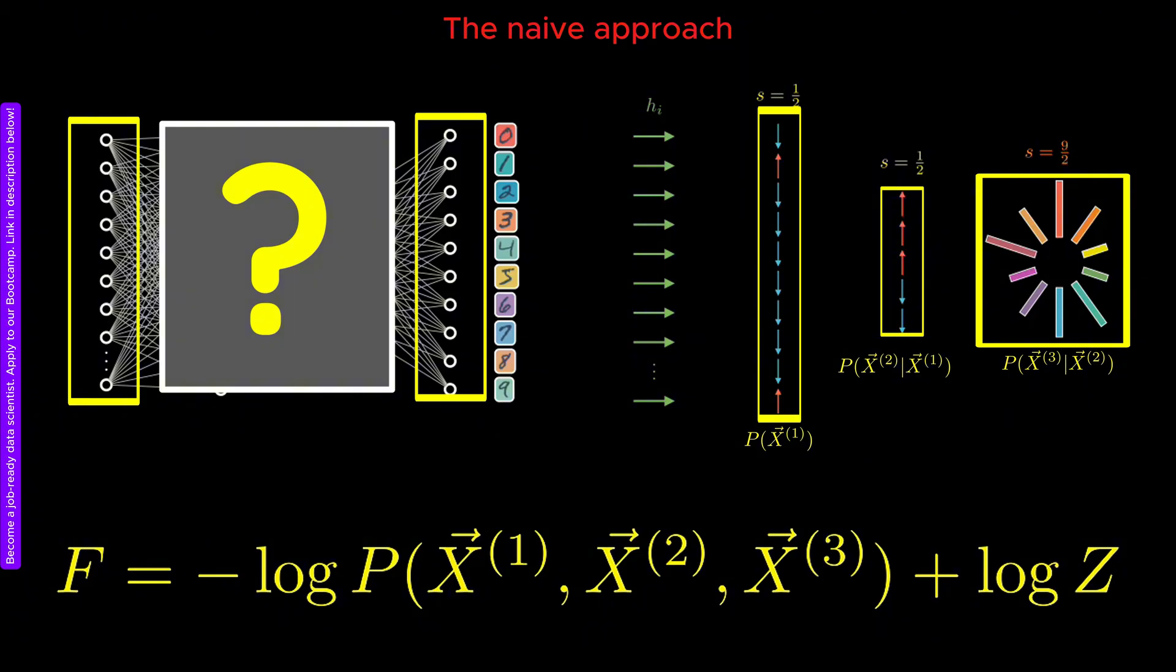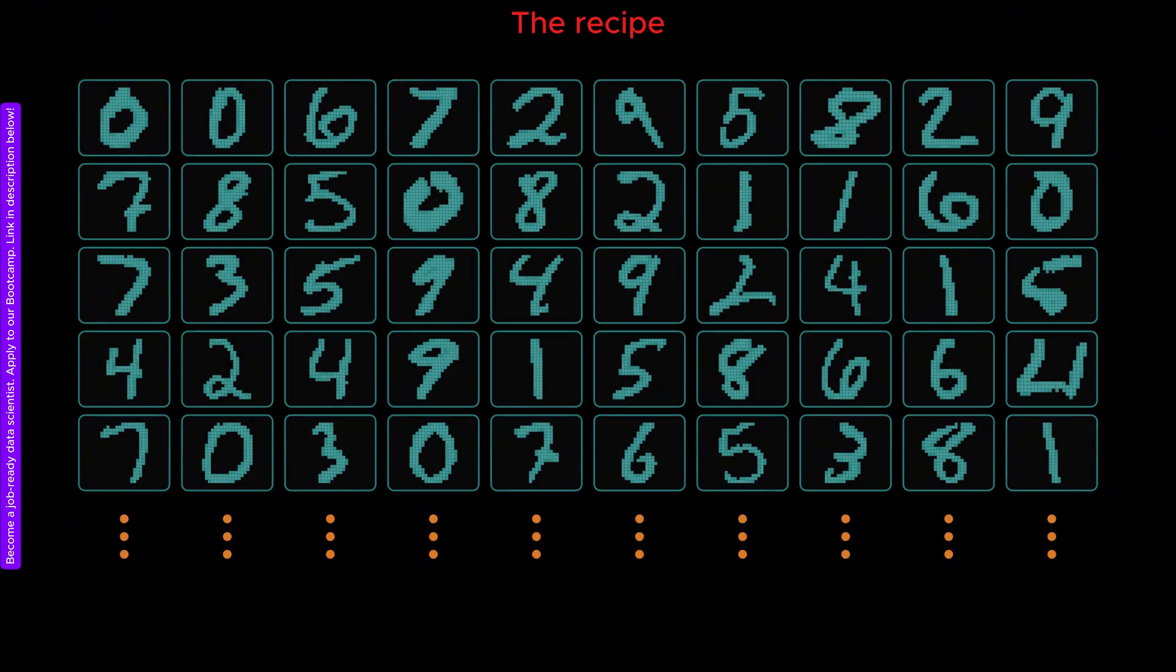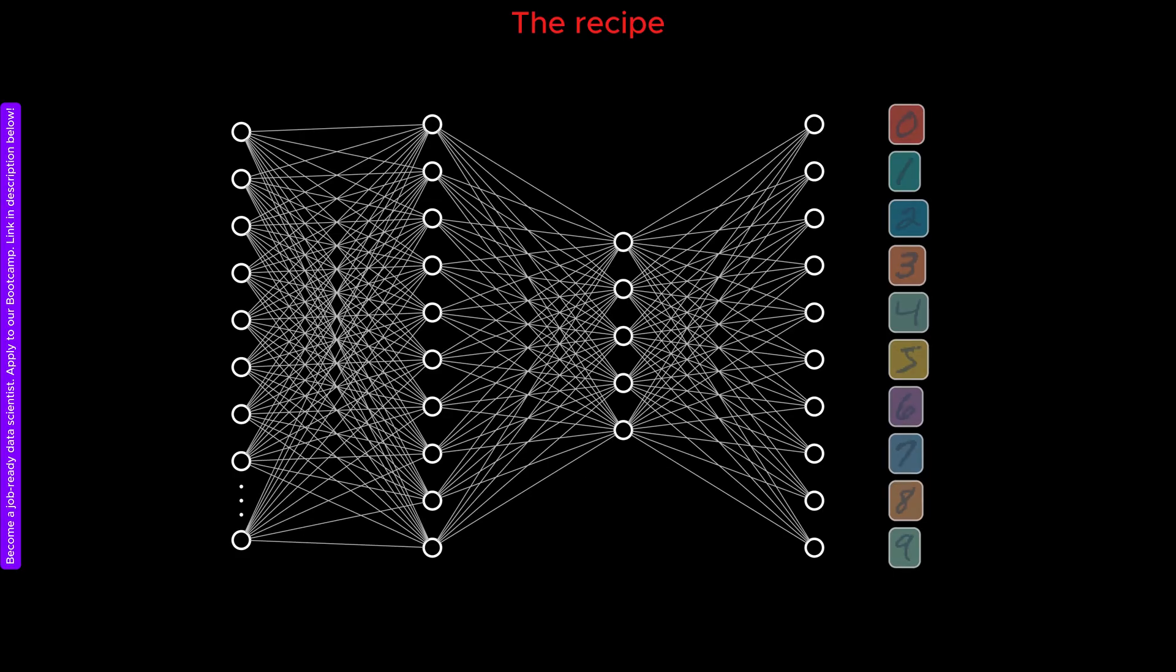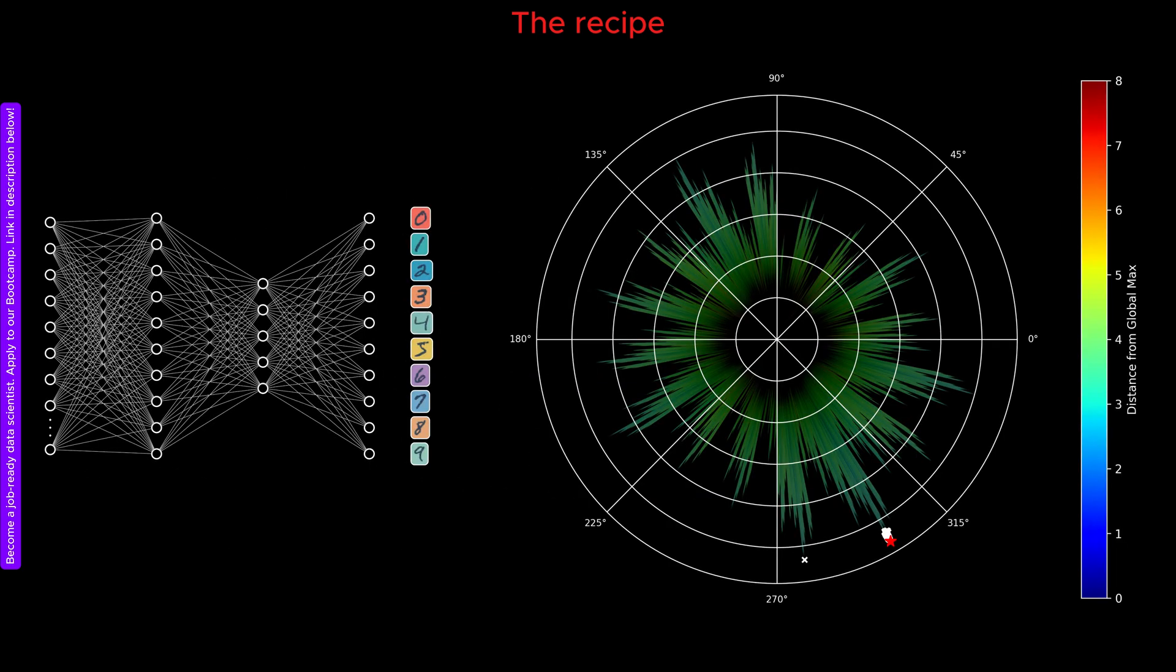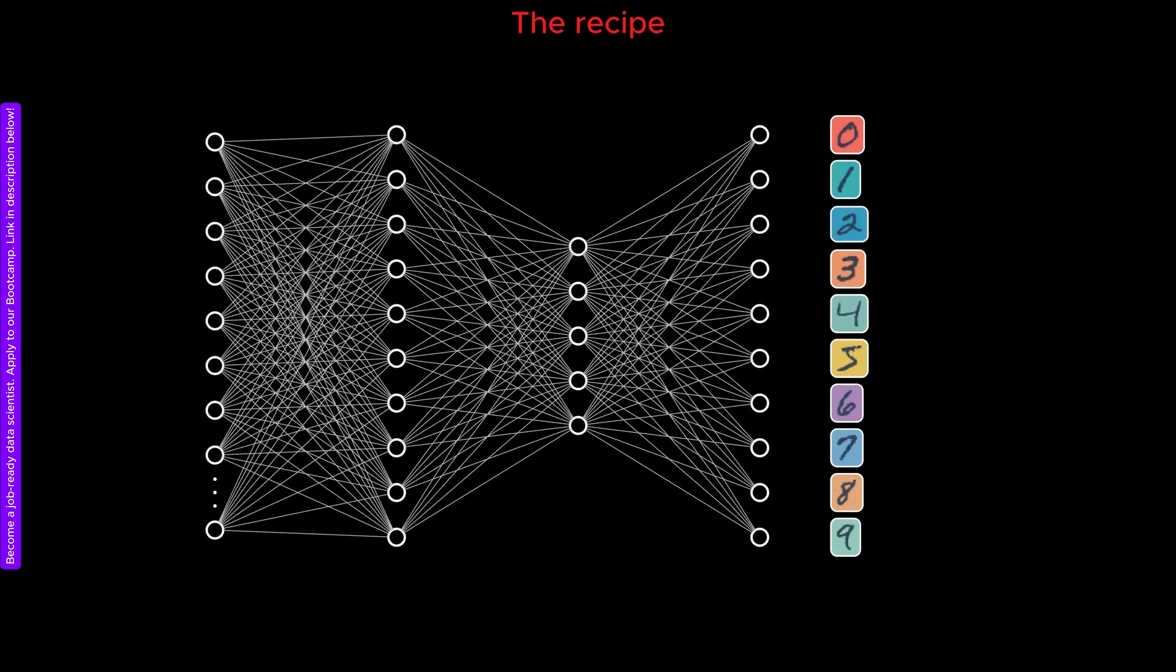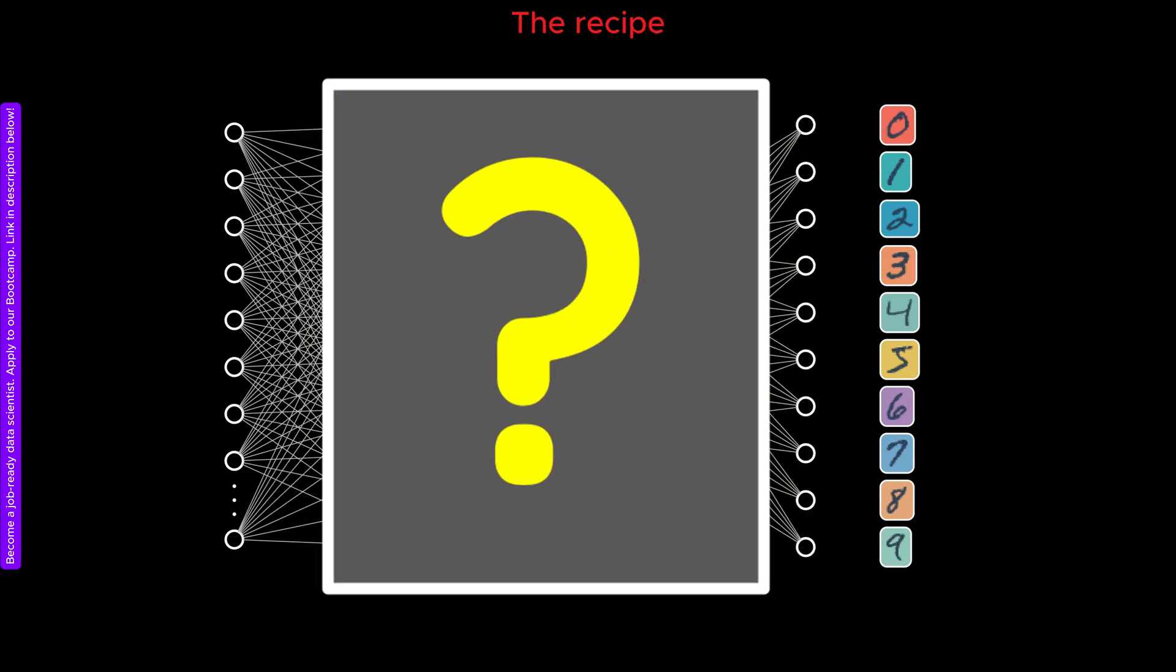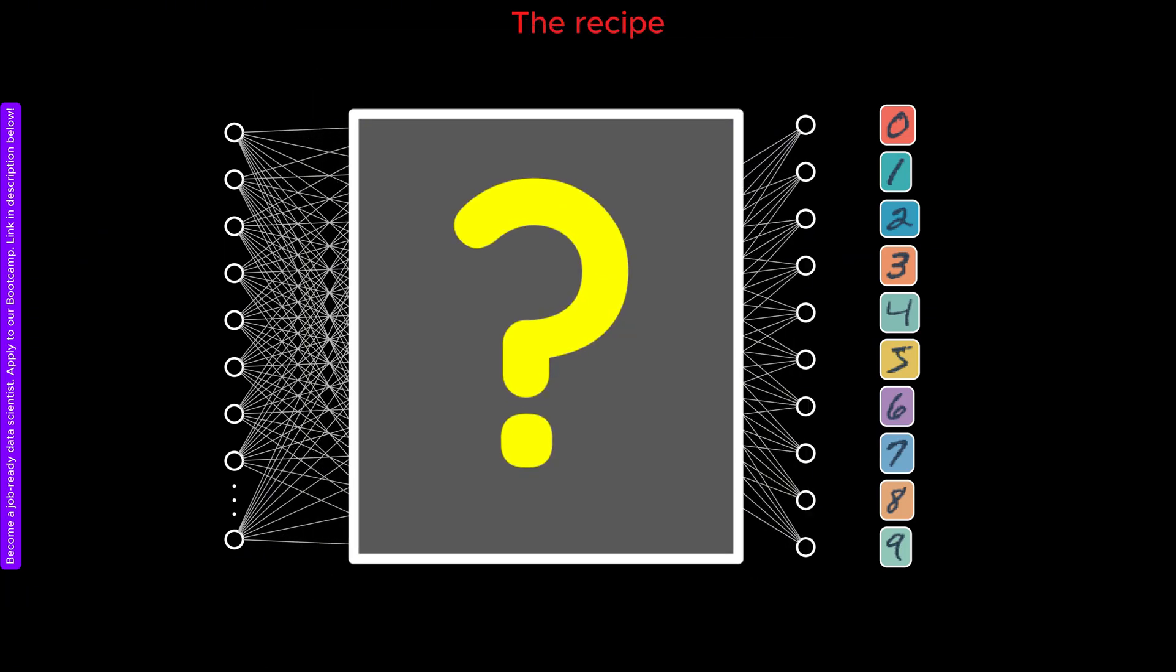This approach is largely independent of the internal structure of the AI model. To make the method more concrete, however, let us consider a simplified example. Assume we are classifying thousands of handwritten images using a fully connected neural network. Unlike in the previous video, we want to learn the free energy landscape using a top-down approach.